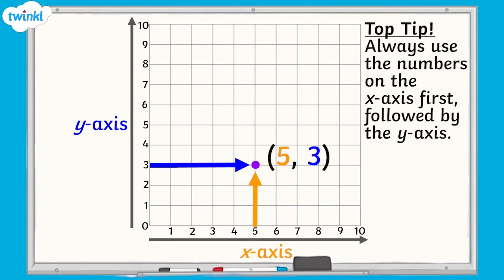Remember that when you're reading coordinates, you always use the numbers on the x-axis first, followed by the y-axis. When we're writing coordinates, we always separate the numbers used in the coordinates with a comma, and place them in brackets.